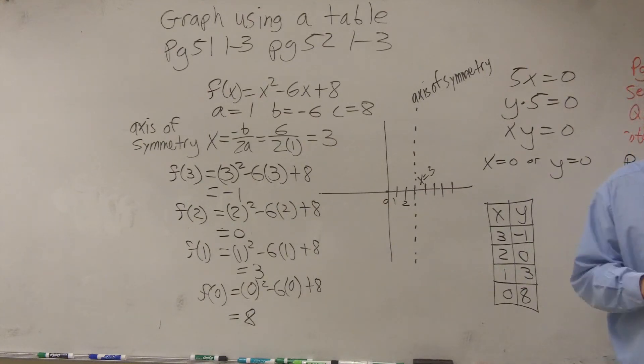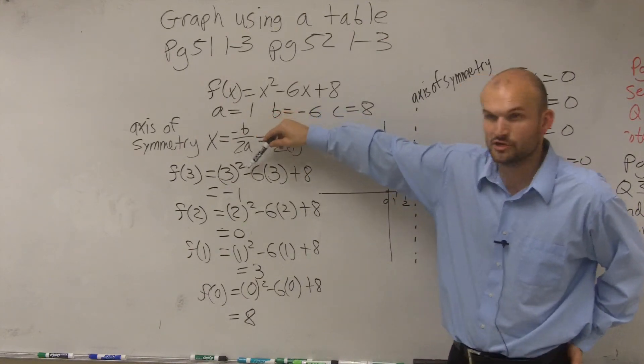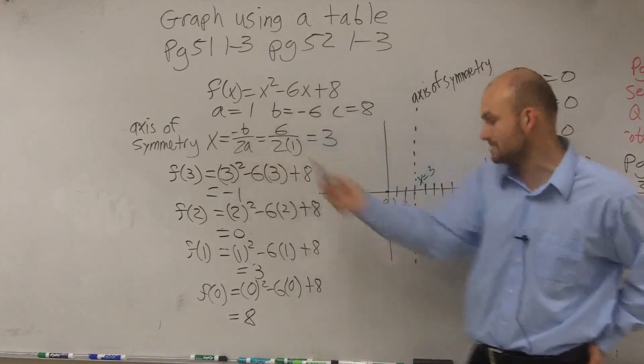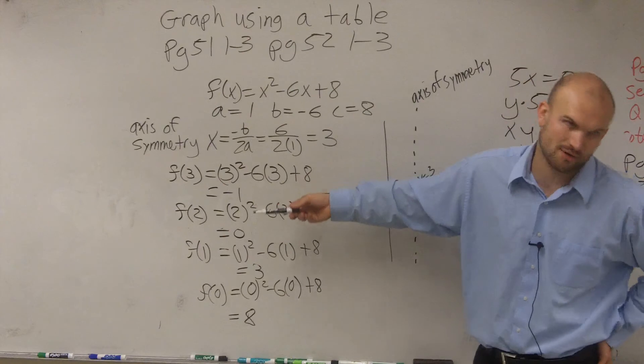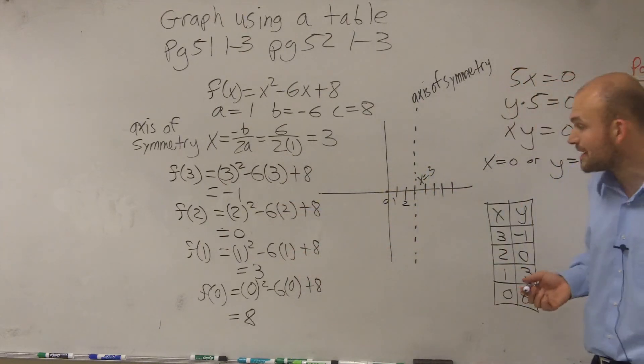So what we have just created is, if you guys have noticed, what we did is we found the vertex. We found the axis of symmetry. Then we plugged it in to find the vertex. Then what we're going to do is now we found two - I want you guys to find two other points, but we end up finding three other points. Now what we're going to do is we're going to plot those points.